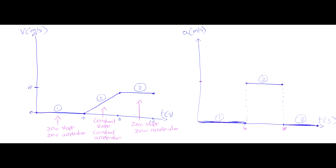So now we have the shape of our acceleration-time graph just by thinking about the slope. Now we need to put some numbers on it. Section 1 is flat — zero acceleration, no calculation needed. Section 3 is also flat — also zero acceleration. But in the middle, section 2, we have a constant slope which means a constant acceleration, so we can calculate the number that acceleration is by actually calculating the slope.